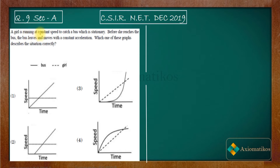The problem: a girl is running at a constant speed to catch a bus which is stationary. Before she reaches the bus, the bus leaves and moves with a constant acceleration. We need to identify which graph correctly describes this situation.